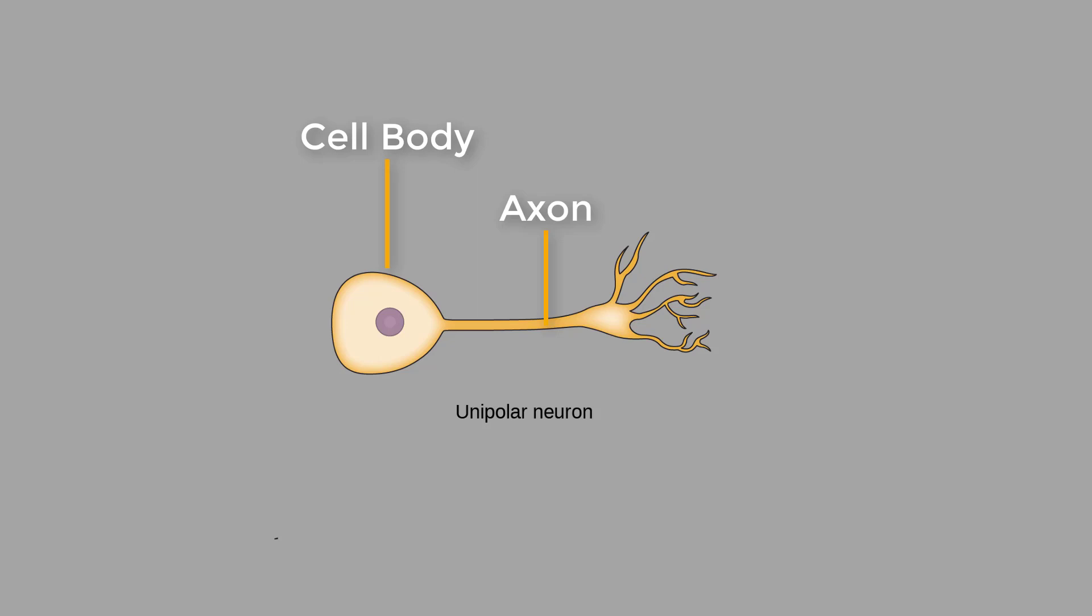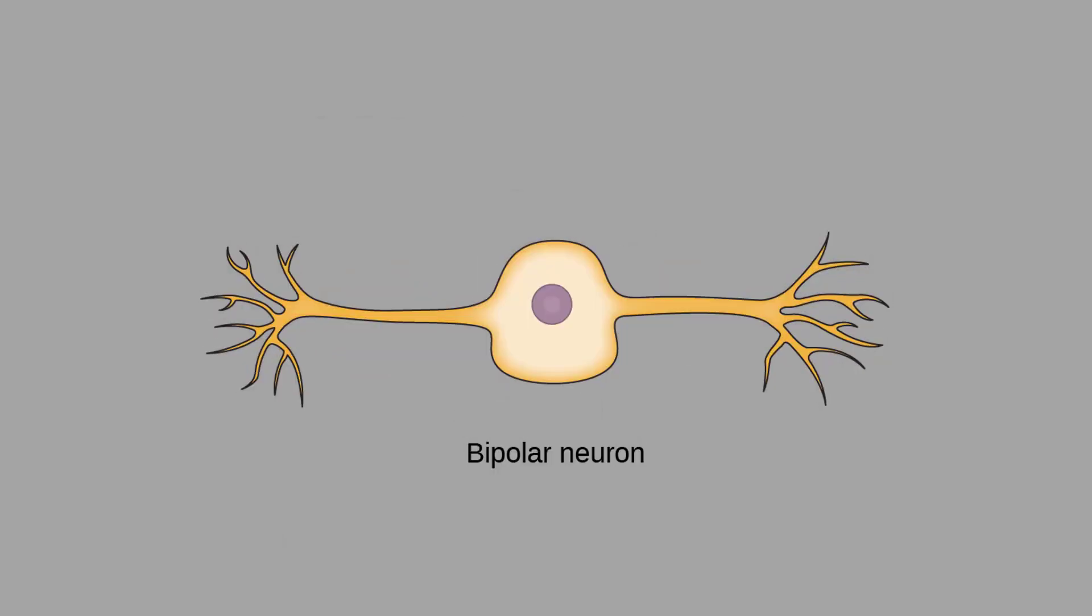The second type is called a bipolar neuron. This has one axon and one dendrite extending from the soma. An example is a retinal bipolar cell.